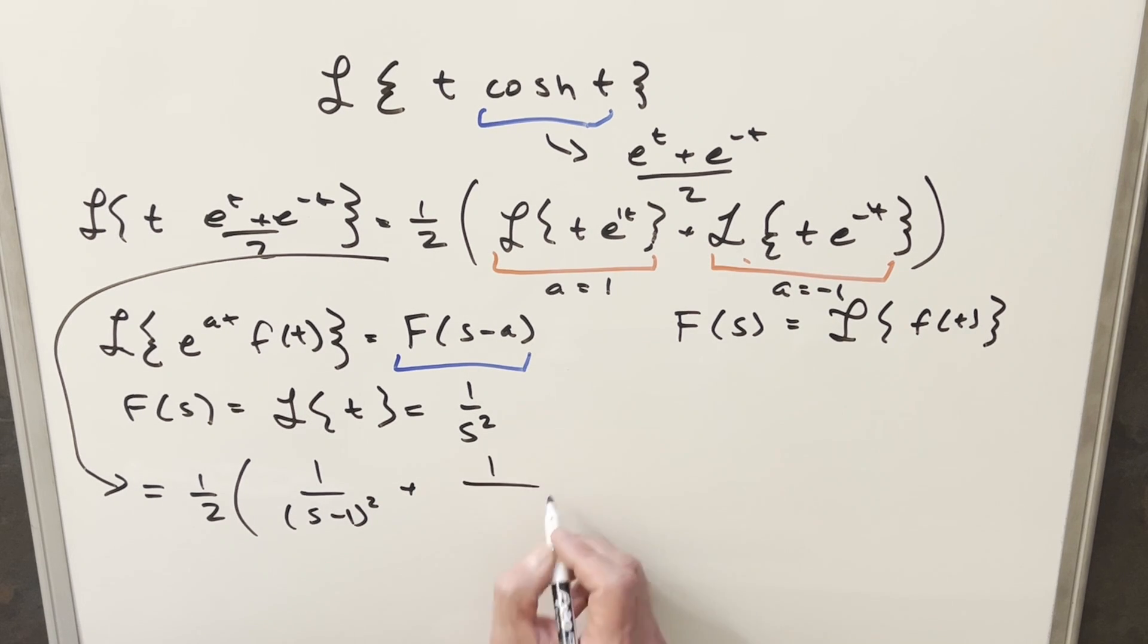Then here, same kind of thing, we're going to have our one over s squared. So inputting here s minus minus one squared, but minus times minus is plus, so this is just going to be s plus one.